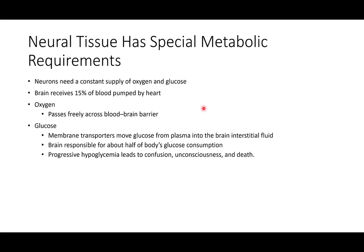There is a very high demand for oxygen and glucose in the brain. Because of that, the brain receives 15% of the total blood pumped by the heart. Oxygen can pass freely across the blood-brain barrier, while glucose is transported across by membrane transporters, moving from the plasma into the cerebrospinal fluid. The brain consumes about half of the body's total glucose — that's how high the energetic demands of neural tissue are.